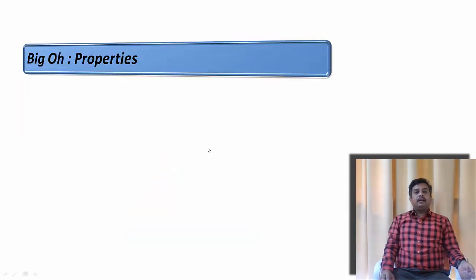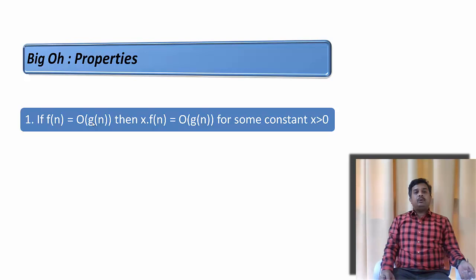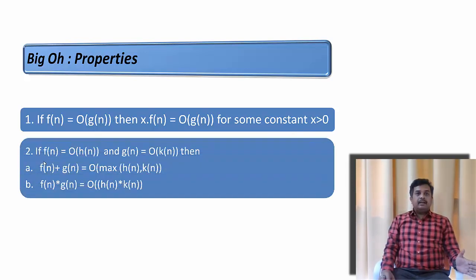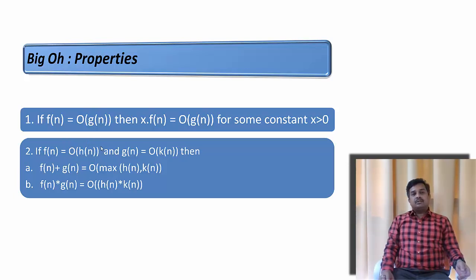A few properties exist for Big O. First: if f equals O(g), then anything multiplied by f is also equal to O(g), where x is any constant greater than 0. Second: if f is O(h) and g is O(kn), then f will be equal to O(max(h, kn)). Similarly, if we want to multiply f and g, we will have O(h·kn). We will use these properties to solve problems in coming videos.